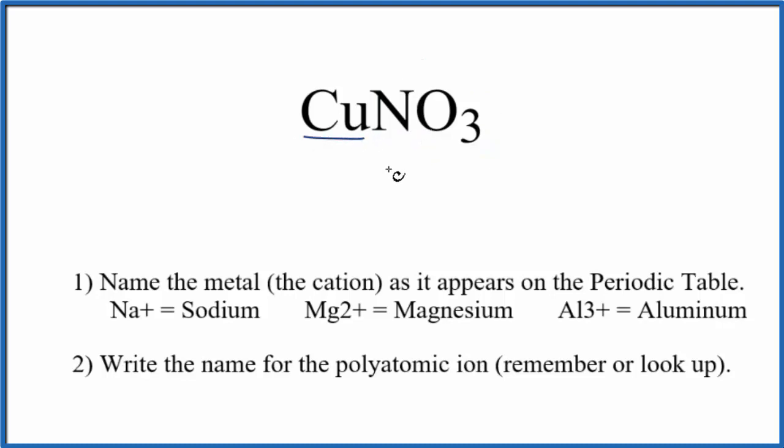The copper is a transition metal. So we have our transition metal and a non-metal, this group of non-metals. This is an ionic compound. So we're going to use these rules to write the name for CuNO3.